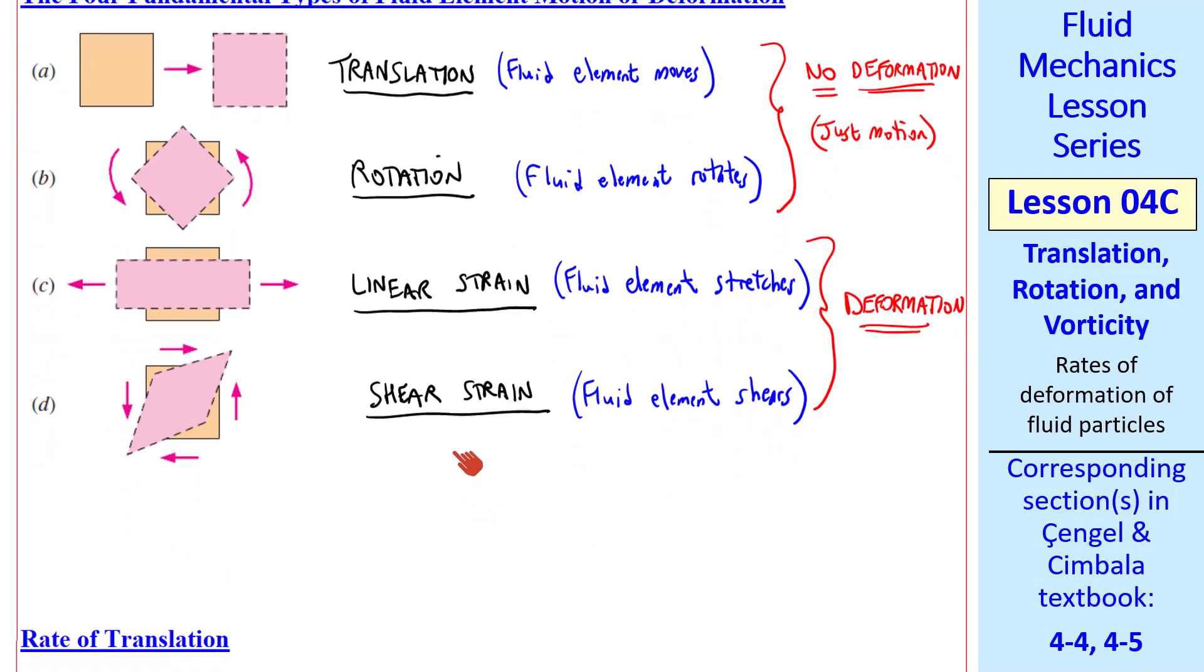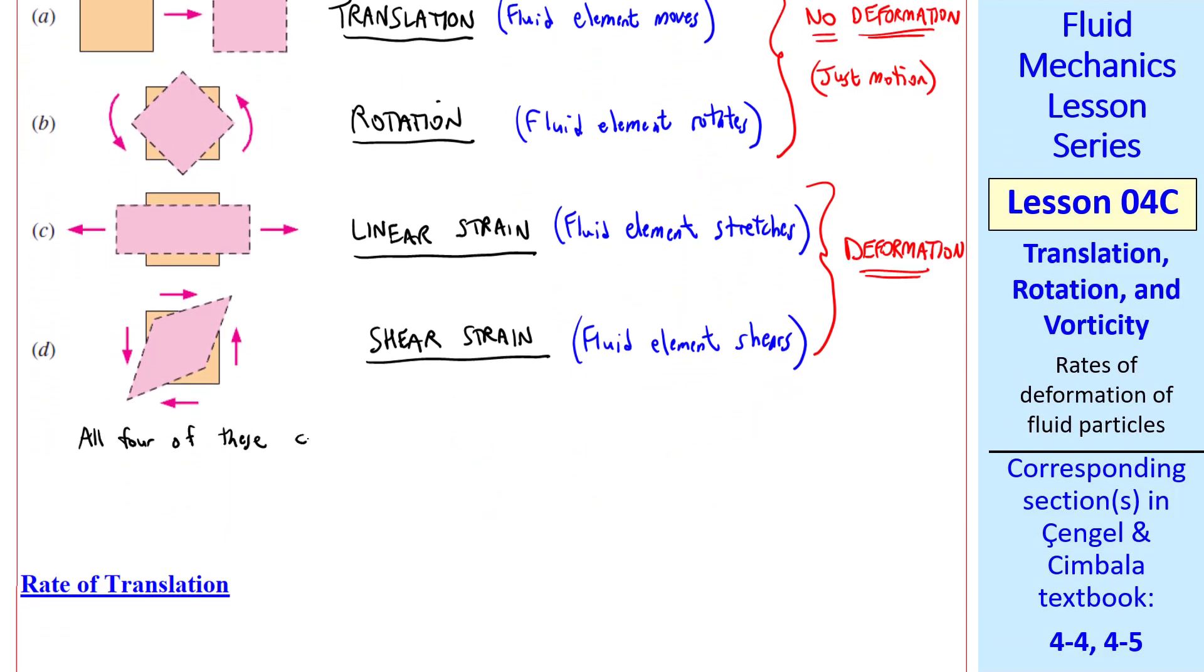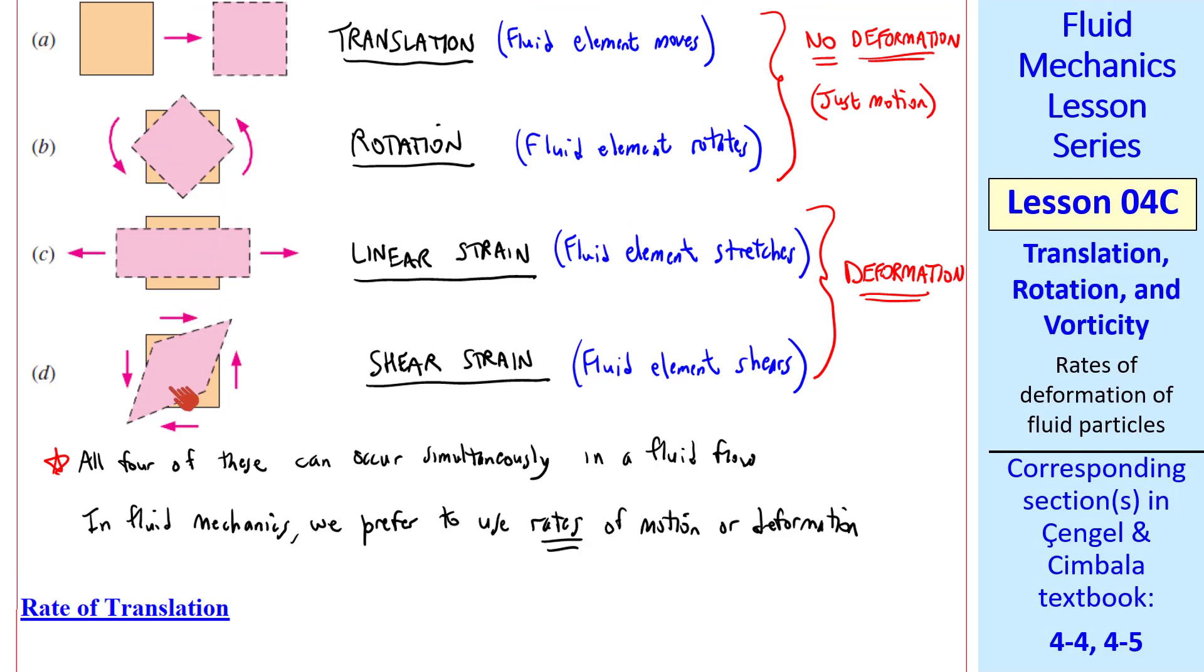What makes fluid mechanics difficult is that all four of these can occur simultaneously in a fluid flow. A particle can translate, rotate, and strain all at the same time. We define these same movements and deformations in solid mechanics, but in fluid mechanics, we prefer to use rates rather than these motions and deformations themselves. That's because this is a continuous process with fluids. These motions and deformations are going on constantly in a fluid flow. So let's look at the rate of each of these four. I'll do only the first two in this lesson.